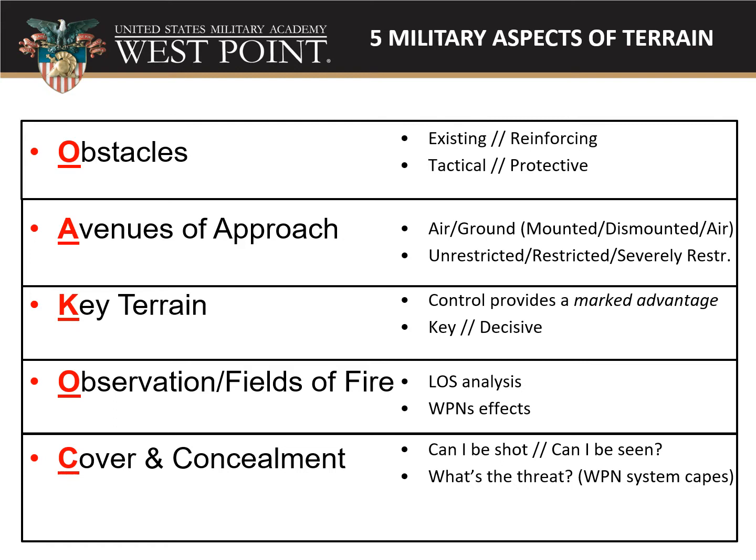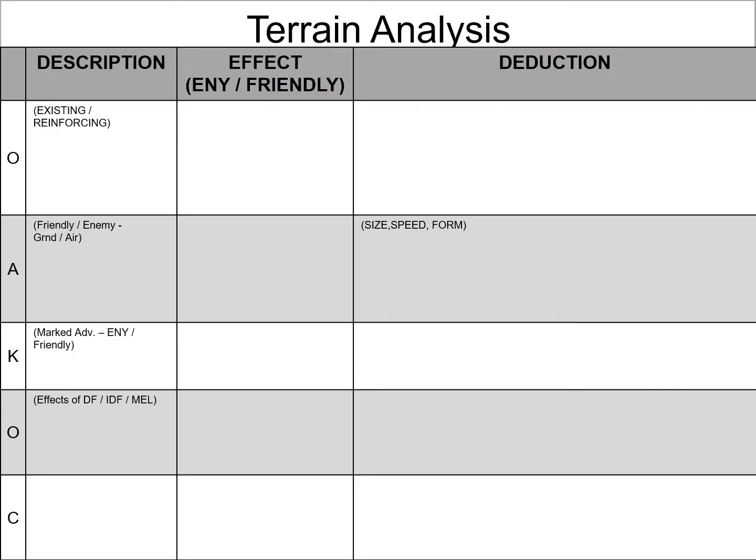The five aspects of military terrain are something you should already know, but here is a refresher. We're talking about obstacles, avenues of approach, key terrain, observation and fields of fire, and cover and concealment. We'll walk through each of those and talk about how we think about them.